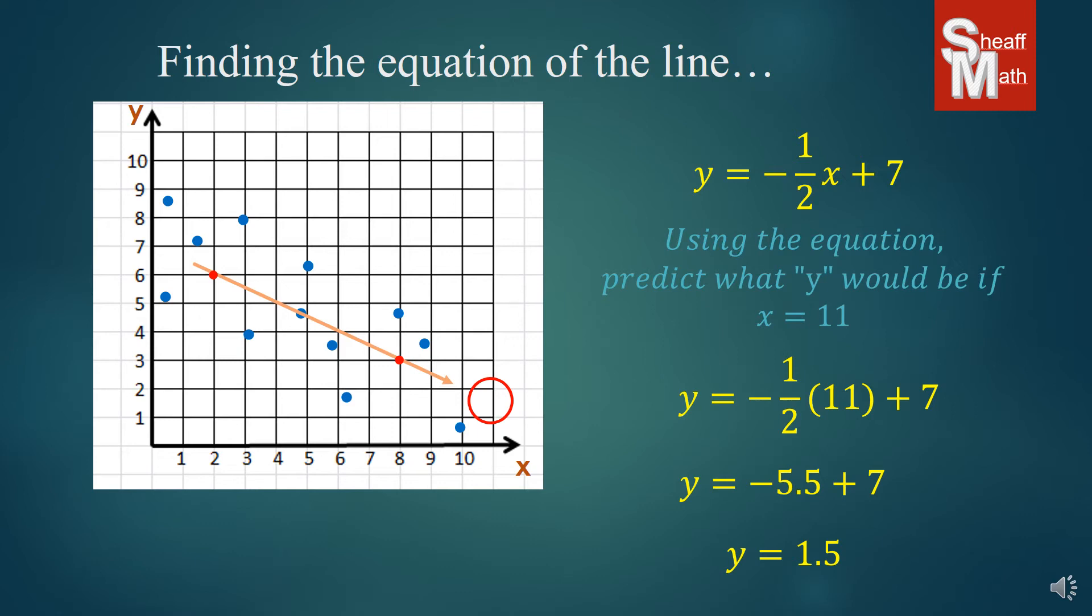Now, this particular scatter plot has no context. There's no meaning to it other than there's 10 numbers on both sides. Sometimes math can get really boring if it doesn't make any sense in the real world. So we're going to look at another scatter plot that does make sense.